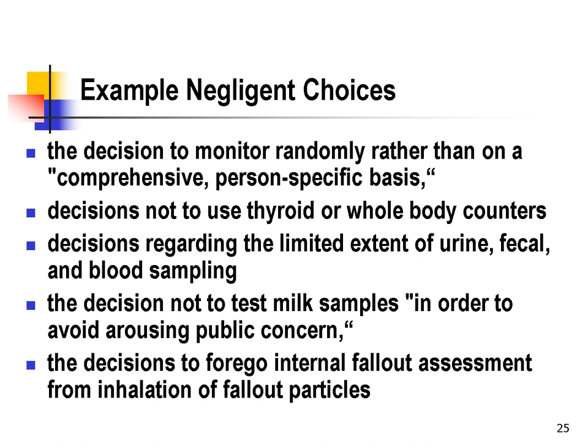The court found many negligent choices — this is just a sampling of them. The decision to only do random monitoring rather than comprehensive person-to-person monitoring. Decisions not to use thyroid or whole-body counters, since the radiation accumulates specifically in the thyroid. Decisions regarding sampling and health sampling in general. The decision not to test milk samples, and the particular reason they didn't want to test milk was in order to avoid arousing public concern — showing that the government was aware of the risk and aware that if the public had known about it, they would have been upset and opposed to the testing. Finally, the decision to forego any internal fallout assessment from inhalation of fallout particles.